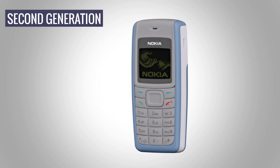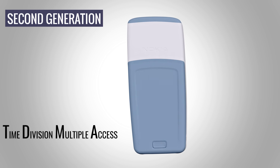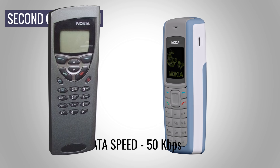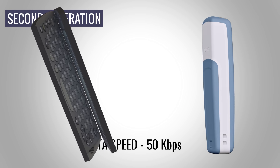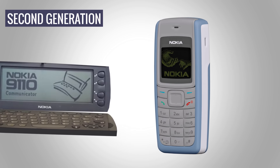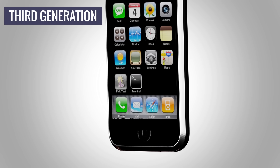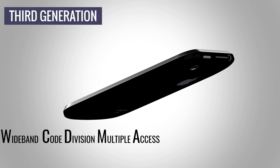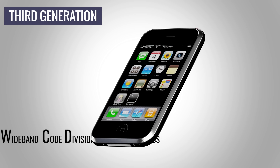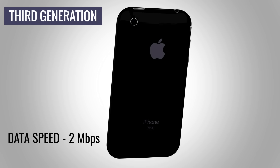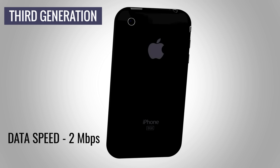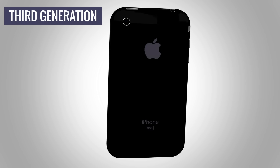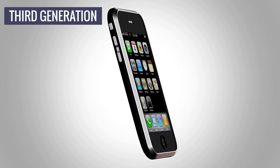2G used digital multiple access technologies, namely TDMA or CDMA technology. The second generation also introduced a revolutionary data service — SMS and internet browsing. 3G technology was focused on giving a higher data transfer speed. It used a WCDMA multiple access technique, along with an increase in bandwidth, to achieve this. The 3G speed of 2 Mbps allowed the transfer of data for uses such as GPS, videos, and voice calls. 3G was a huge step in the transformation of the basic phone to a smartphone.